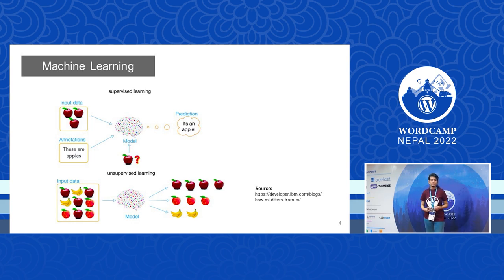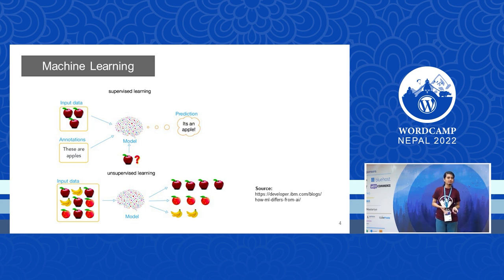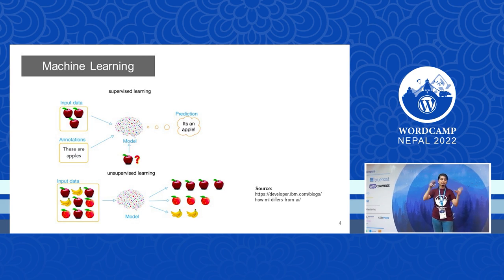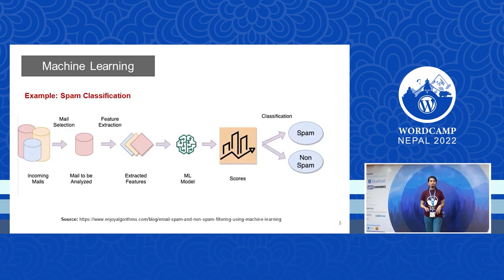The model will understand the differences between what it got and what it should have got. In unsupervised learning, the model will take the data and just learn from it — it will not know the output previously. It tries to figure out certain patterns from the data and clusterizes similar features into one cluster. For example, apples are clusterized in one class and bananas are clusterized in another cluster.